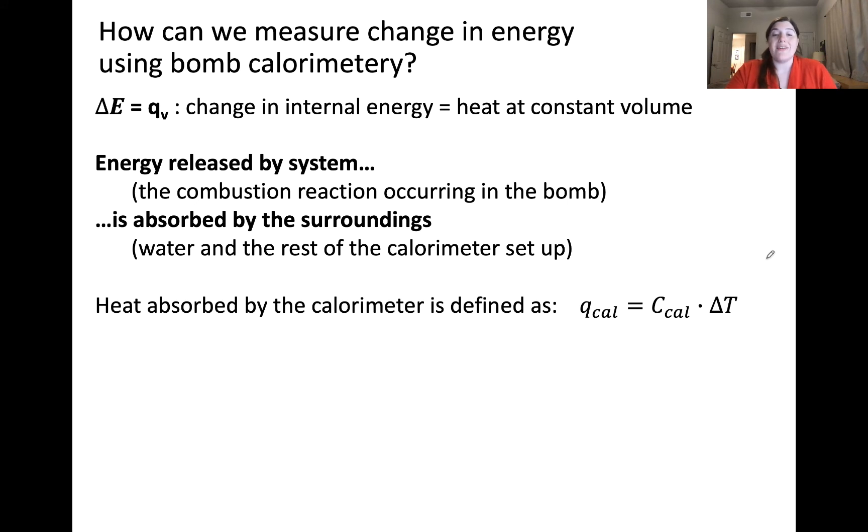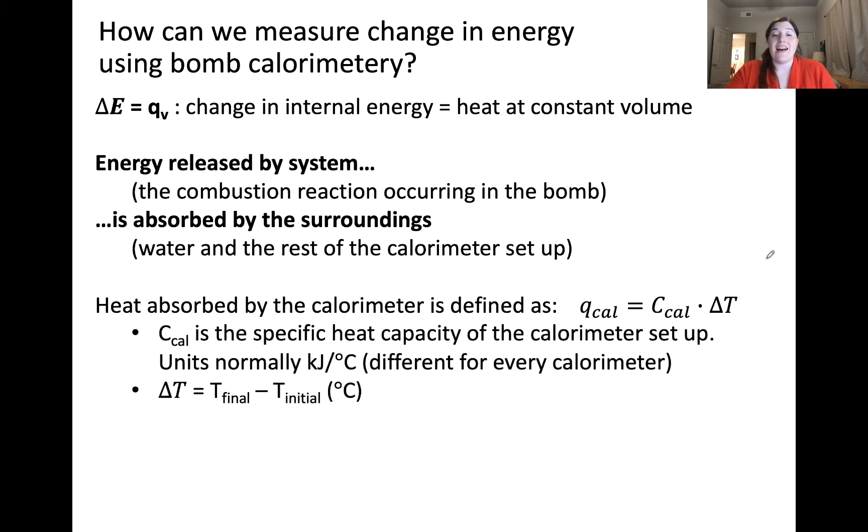We can then define the heat absorbed by the calorimeter as C_cal, which is the specific heat capacity of the calorimeter setup. This is typically measured in a separate experiment, times delta T, T_final minus T_initial. If the units of the specific heat capacity of the calorimeter are in kilojoules per degree Celsius, delta T will also be in degrees Celsius. If we use these units, we get a value of Q of the calorimeter in units of kilojoules.